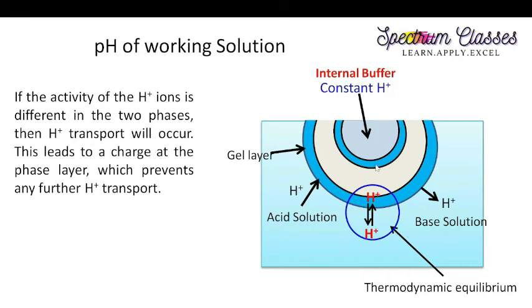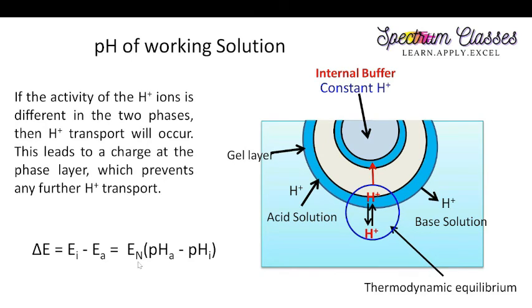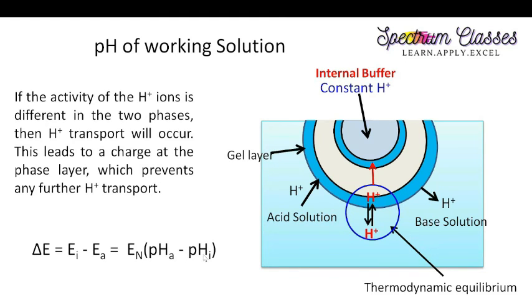When this signal is transmitted, the difference between the activity of the internal buffer and the working solution is measured through the equation: ΔE equals E_internal minus E_acid solution, which equals EN (the slope factor) times (pHA minus pHI). This difference in pH values between the internal and working solutions is measured as a potential, and this potential is further converted to the pH of the solution.